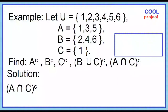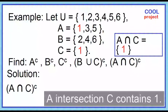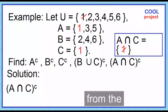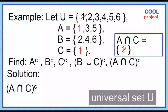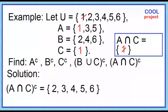Find the complement of the quantity A intersection C. Find the elements of A intersection C first — A intersection C contains 1. Remove 1 from the universal set U, then copy what's left in U. The complement of the quantity A intersection C contains 2, 3, 4, 5, and 6.